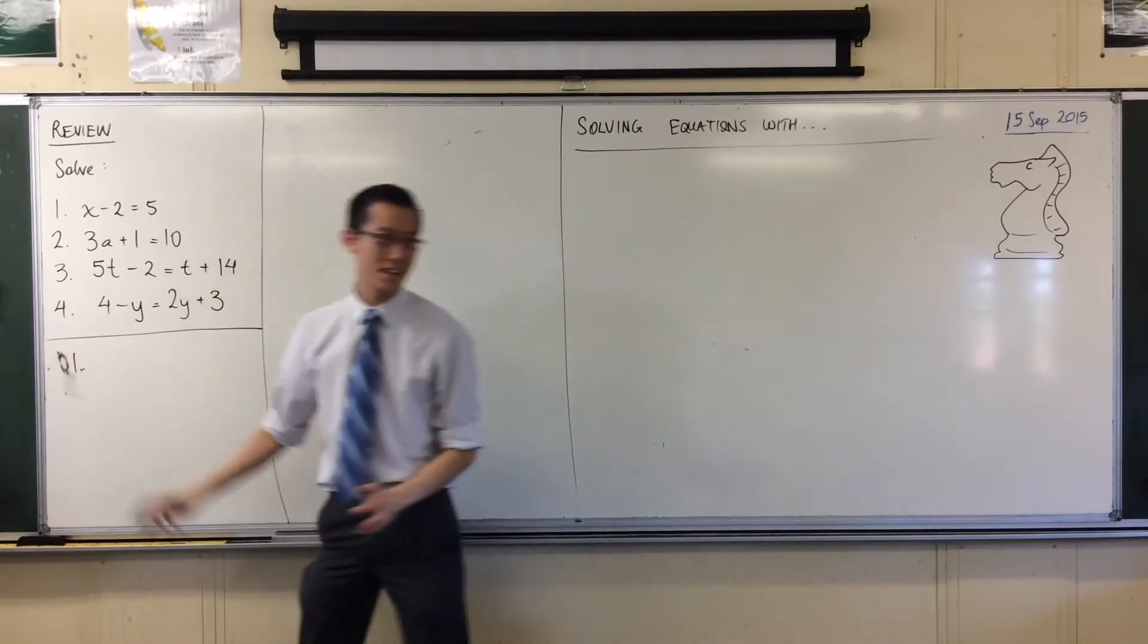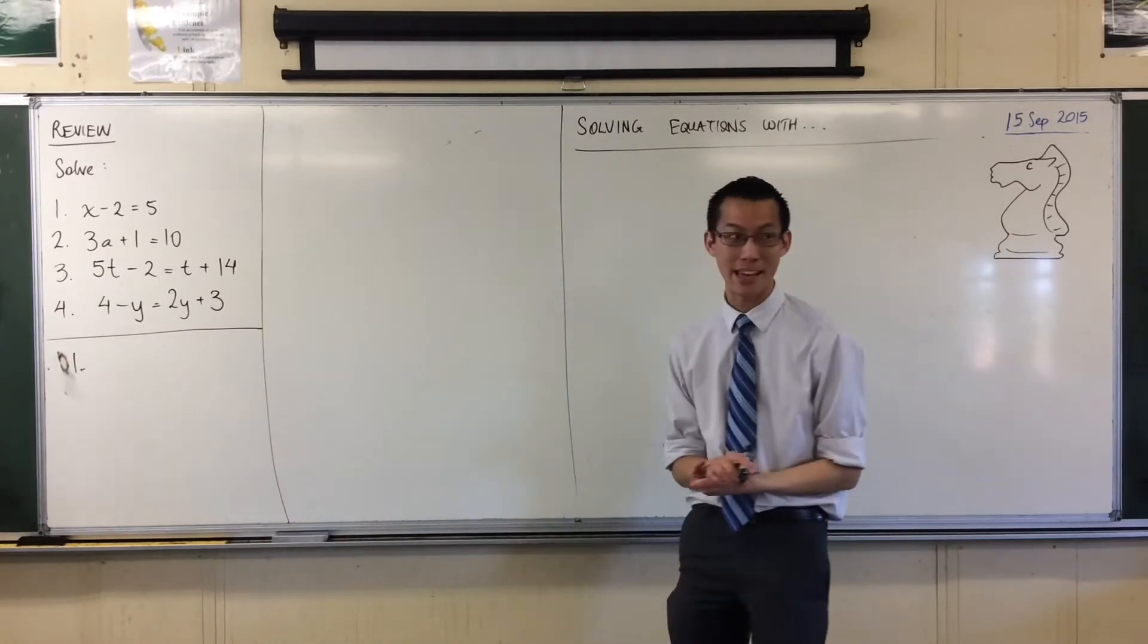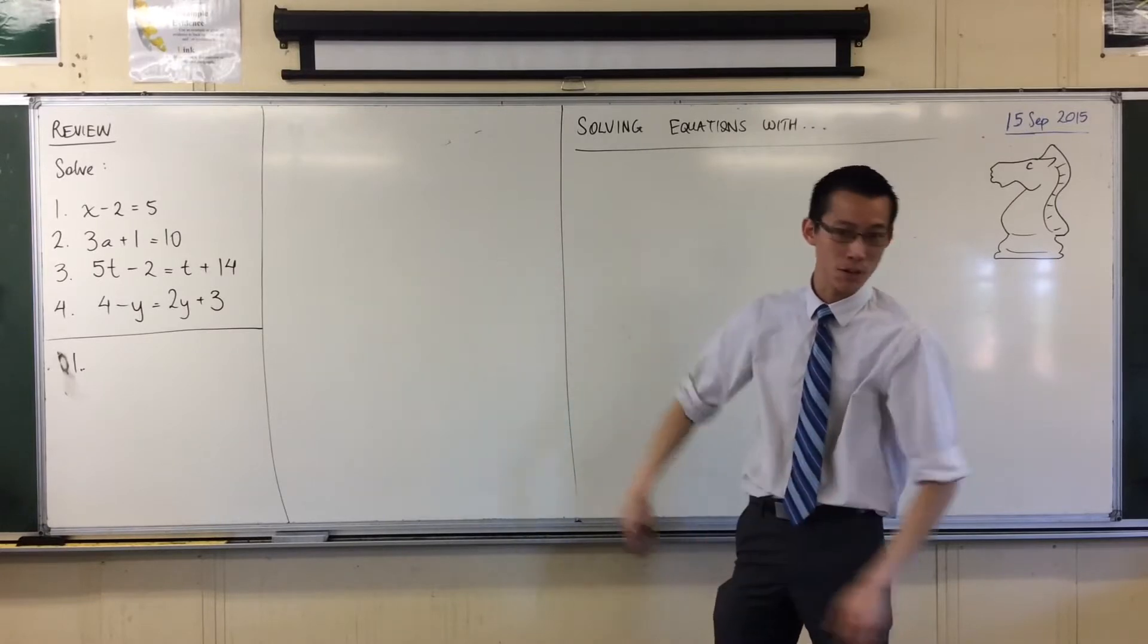This very first one, the very first one, I only have to do one thing to both sides in order to get the x by itself, in order to solve for x. What do I do to both sides?